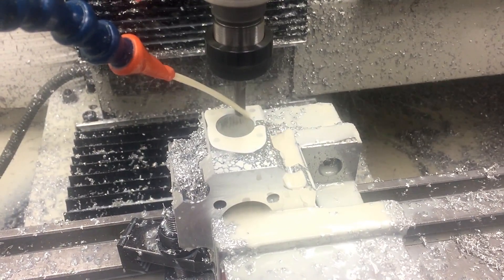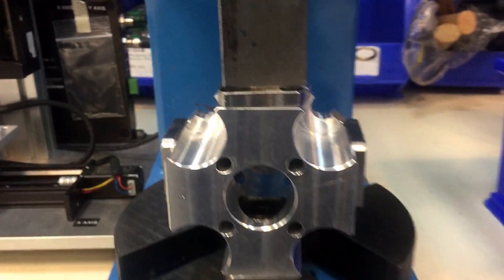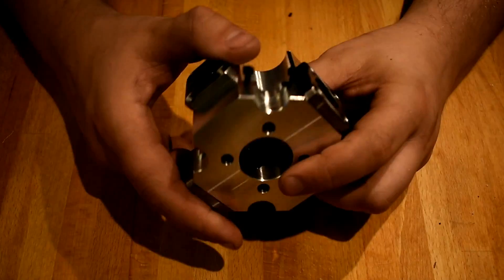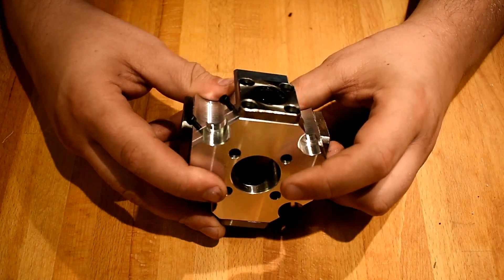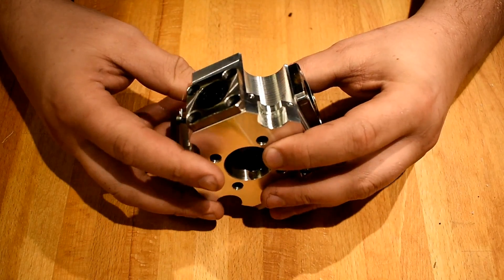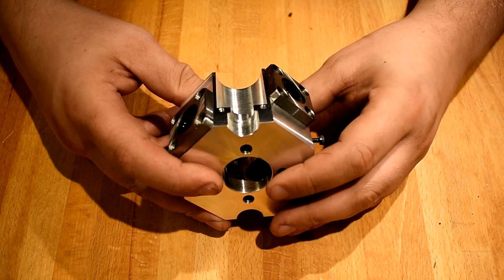One thing I really should have done is made sure that I oversized the bores a little better. That way the bearings would have been located by their flanges and so I wouldn't have had to worry about lining up the bores quite so precisely. As it turns out, they were beautiful slip fits and everything aligned perfectly, so dodged a bullet on that one.